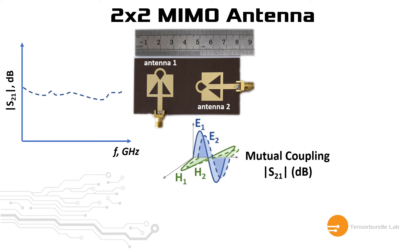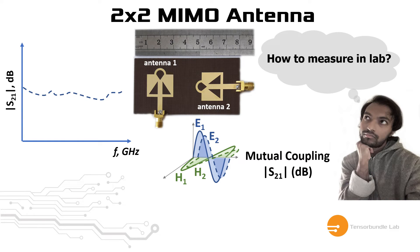For any practical MIMO system, a good mutual coupling level should be below 20 dB. The question is how to measure this mutual coupling in the lab. Let's see.